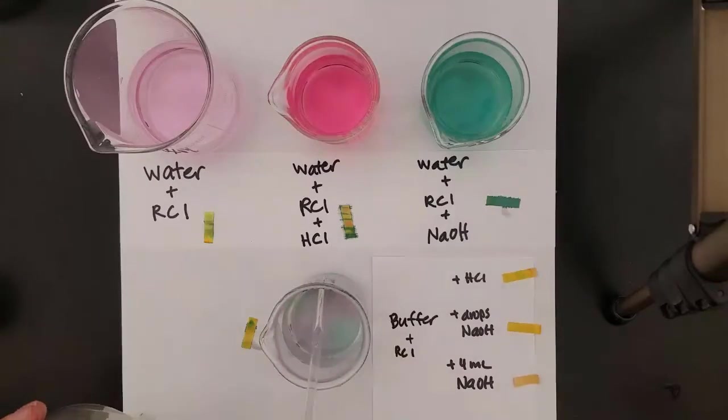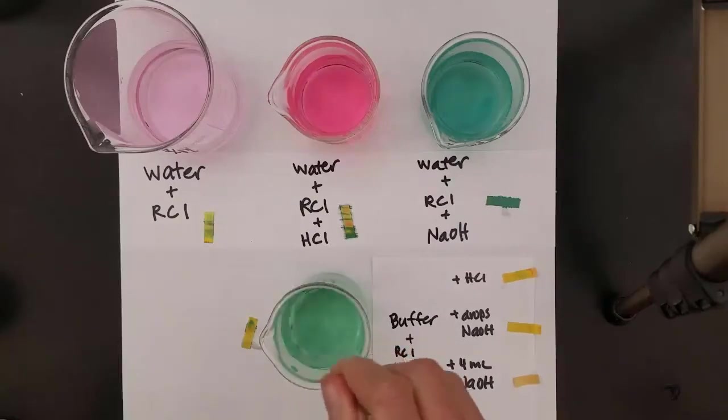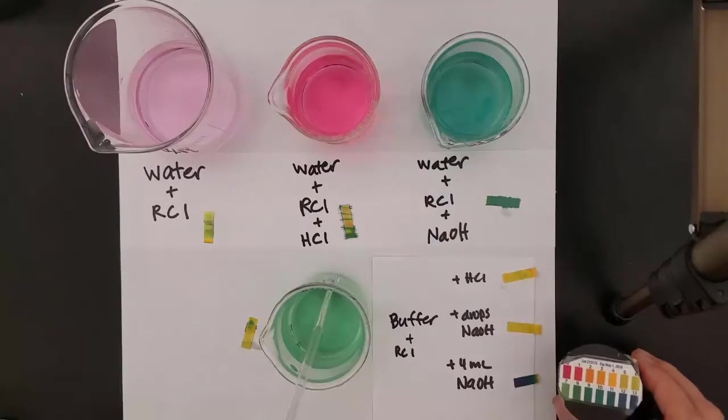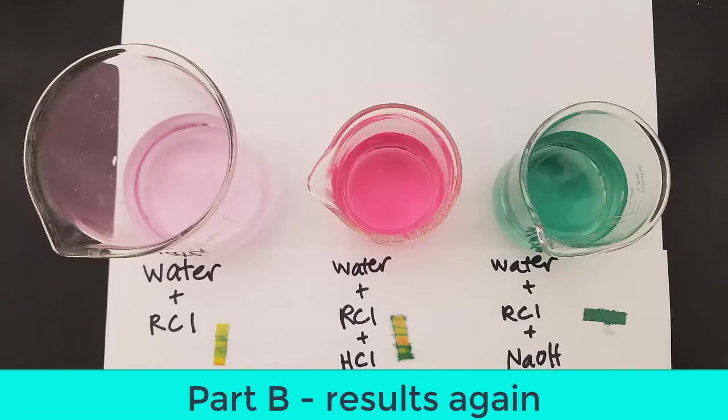So now we're going to try and exceed what the buffer can neutralize. So just poured in a couple full droppers or about 4 milliliters of sodium hydroxide. And you can see that that sodium hydroxide has exceeded the buffer's capacity. There's not enough acid in the buffer to neutralize all that base. So now my pH has skyrocketed to maybe 10 or even 11.